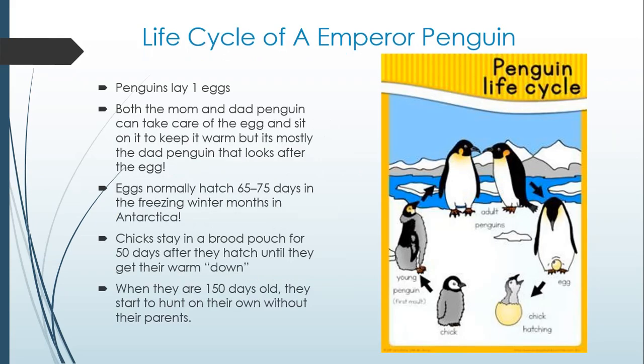So we're going to start with a life cycle of an emperor penguin. Emperor penguins only lay one egg, and both the mom and dad penguin can take care of the egg and sit on it to keep it warm. But it's actually mostly the dad penguin that looks after the egg — the mom goes to find food and then comes back when the egg is hatching, but the dad is in charge of protecting it and keeping it warm.